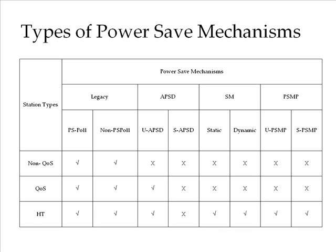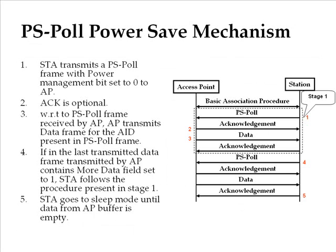Let's go through the Legacy method power save mechanisms. In the Legacy method there are two types: the PSPOL method and the non-PSPOL method. In the PSPOL scheme, the station enters power save mode by sending a null frame to the AP with the power management bit set. From then on, the AP stores all packets destined to that station in a per-station queue.